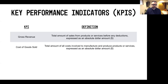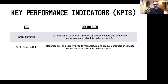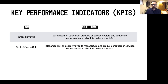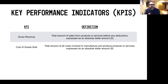Then we've got what we would call your cost of goods sold. Your cost of goods sold is a typical term used to describe the total amount of costs it takes to manufacture or produce a particular product or service, expressed as an absolute value. So whether you're making a pair of shoes, a piece of clothing, a piece of jewelry, or a coffee bean — whatever it costs to put all those pieces together and make that finished product, that's your cost of goods sold.